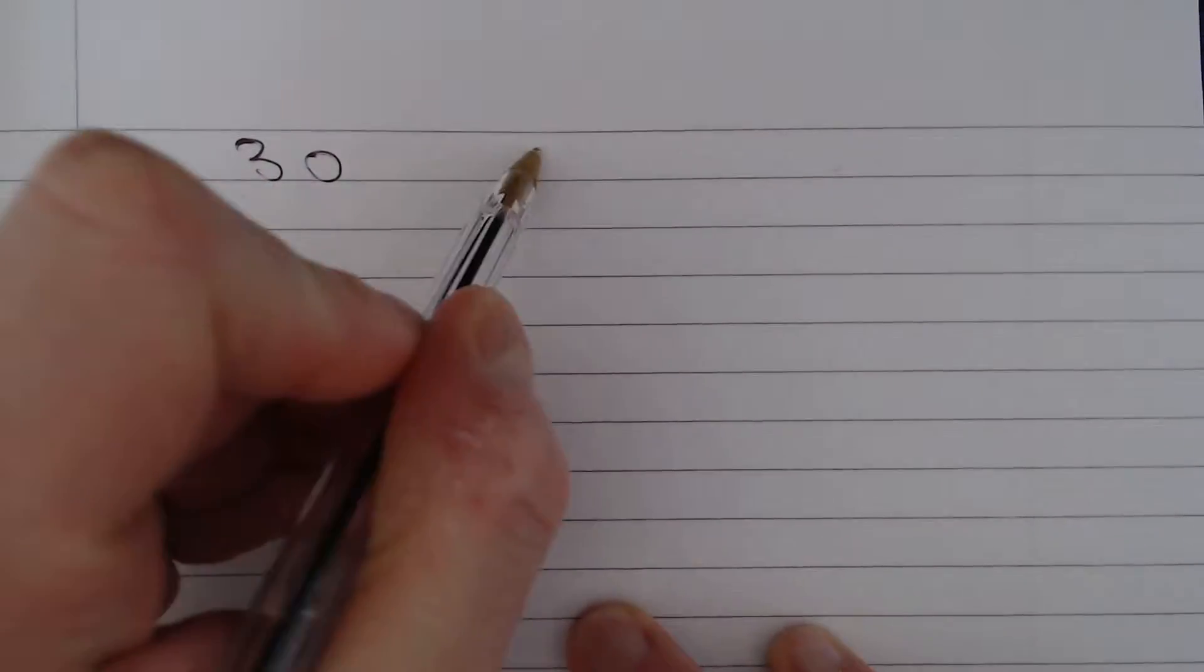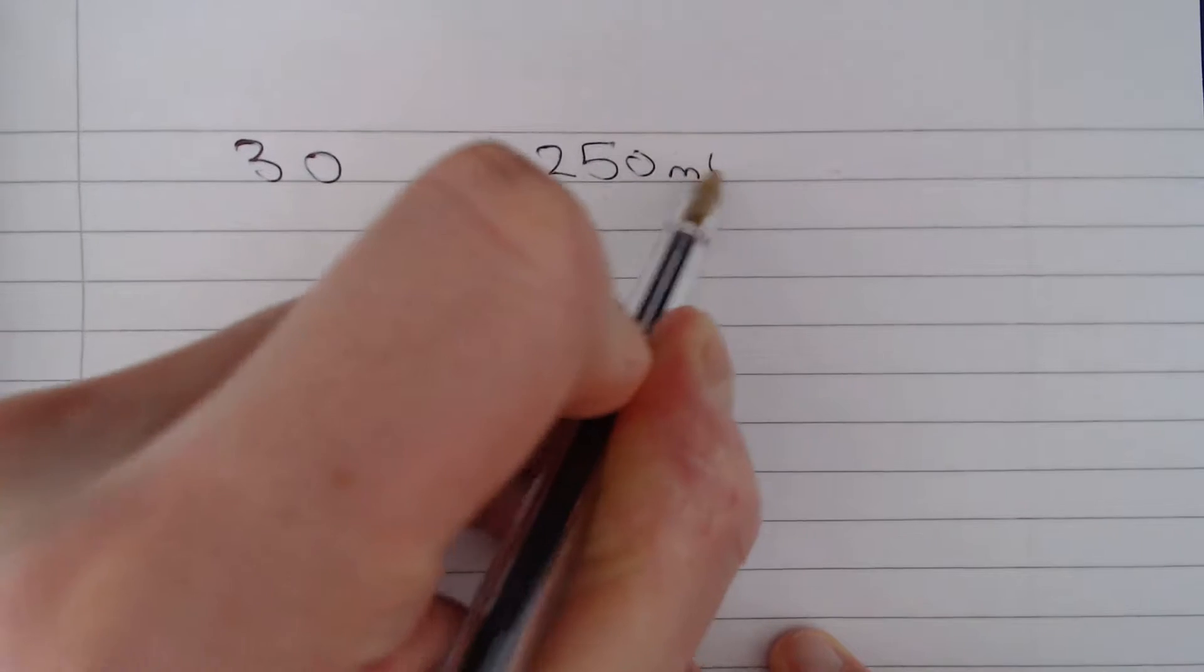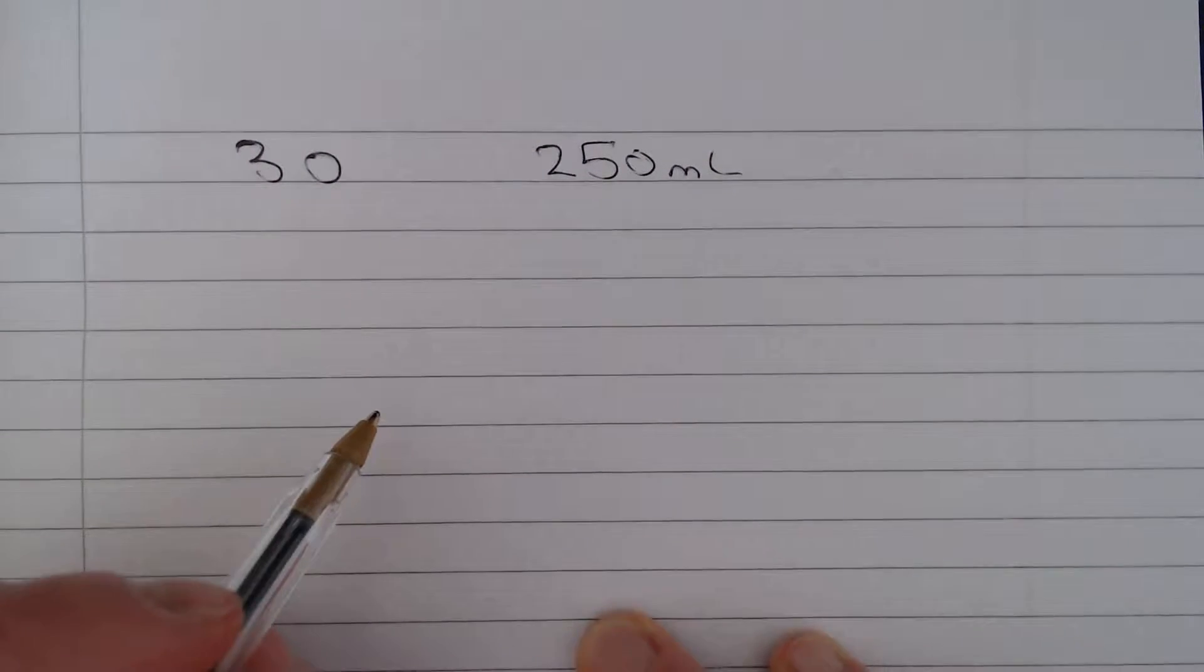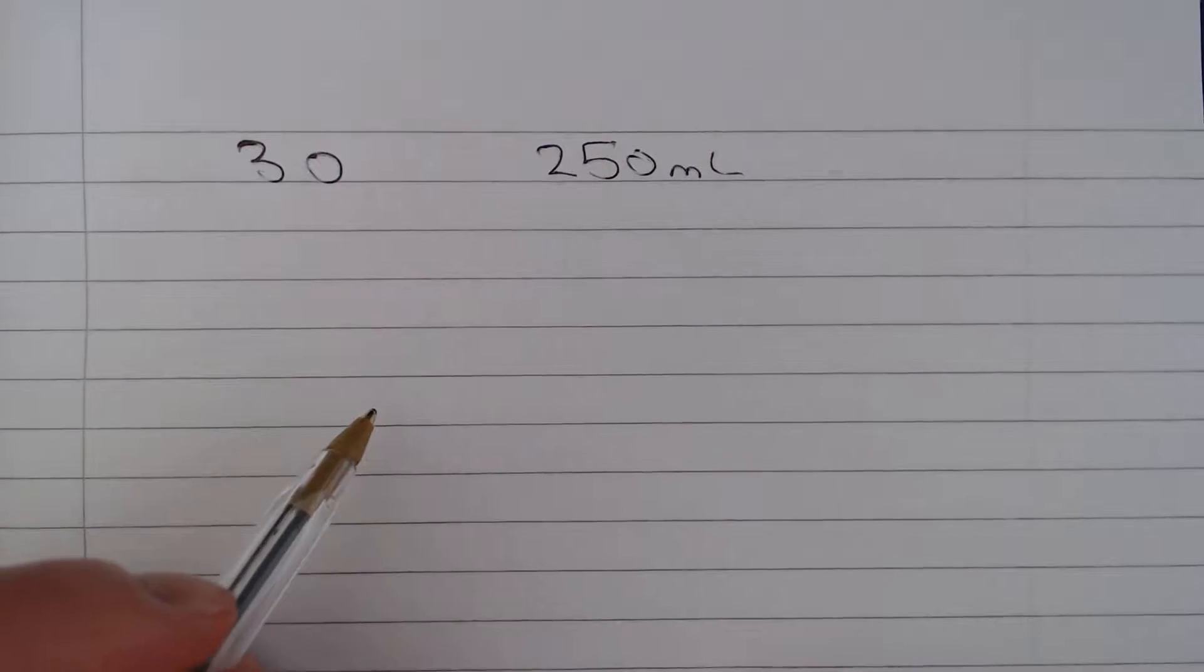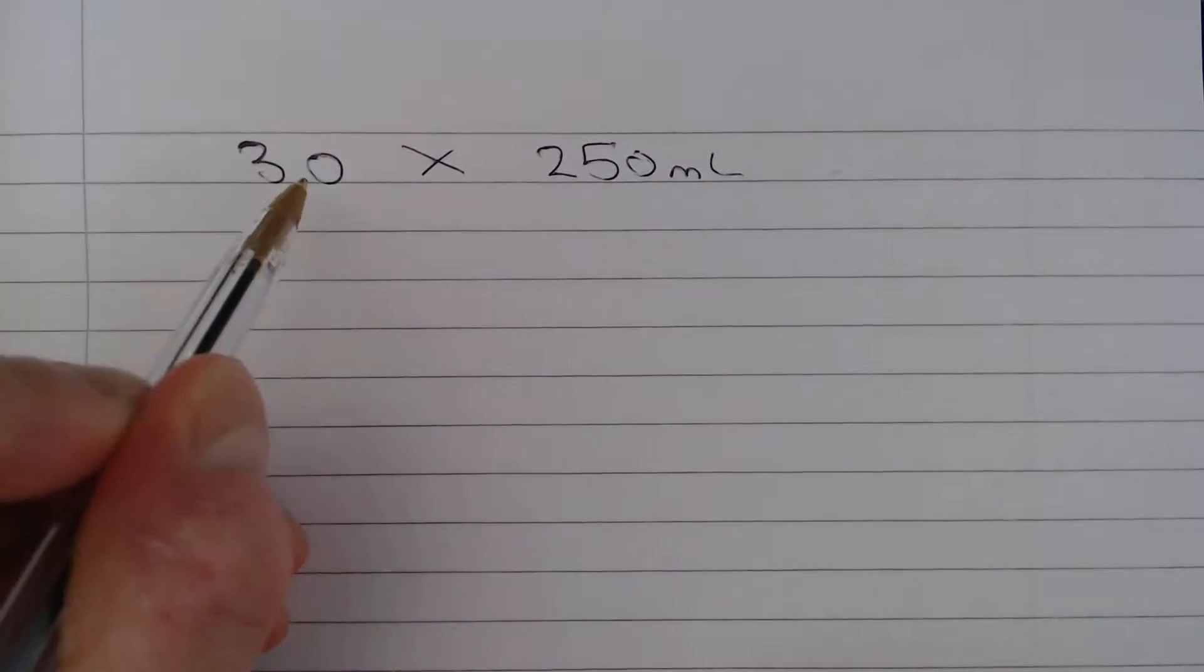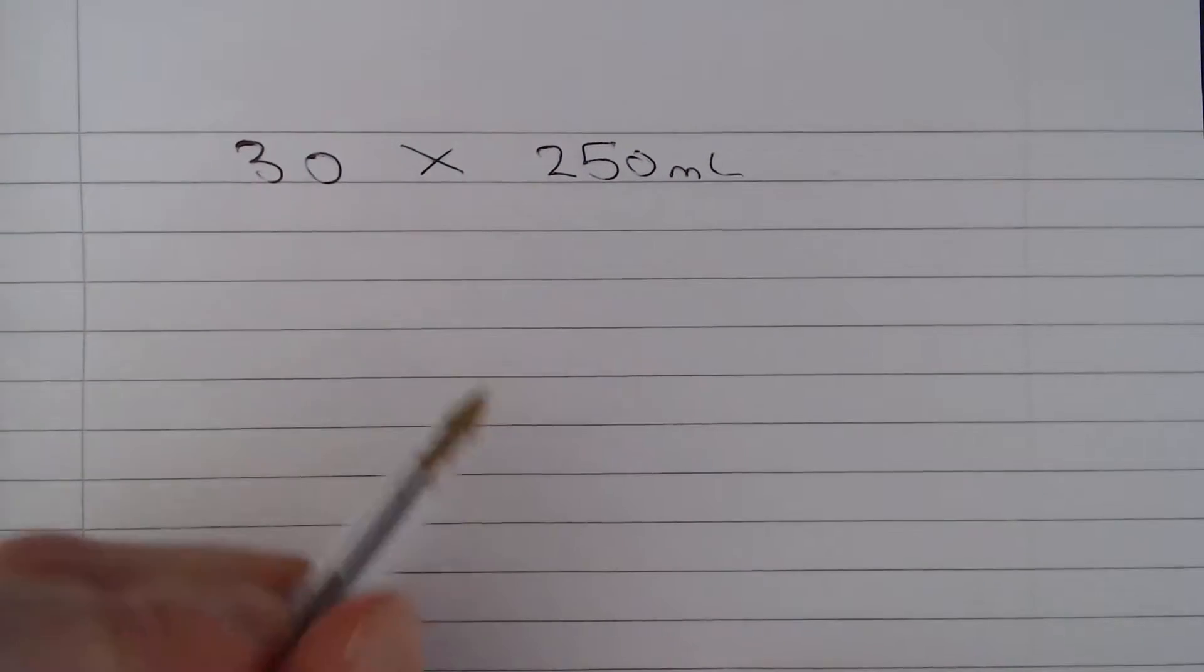Okay, so the key points to pick up from this question is that we have 30 children and they each require 250 millilitres of juice. So we first need to calculate the total volume of juice and we can do that by evaluating 30 multiplied by 250.